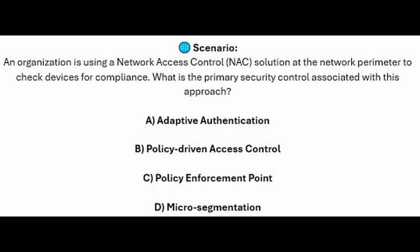And for the next question of our exam, question number 7. An organization is using a Network Access Control, or NAC, solution at the network perimeter to check devices for compliance. What is the primary security control associated with this approach?